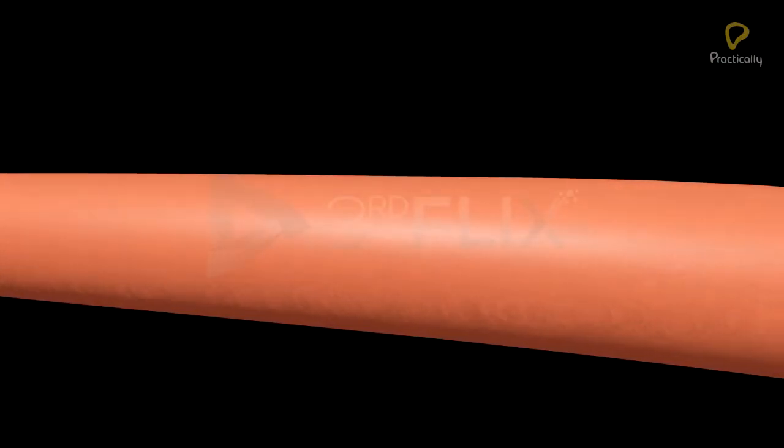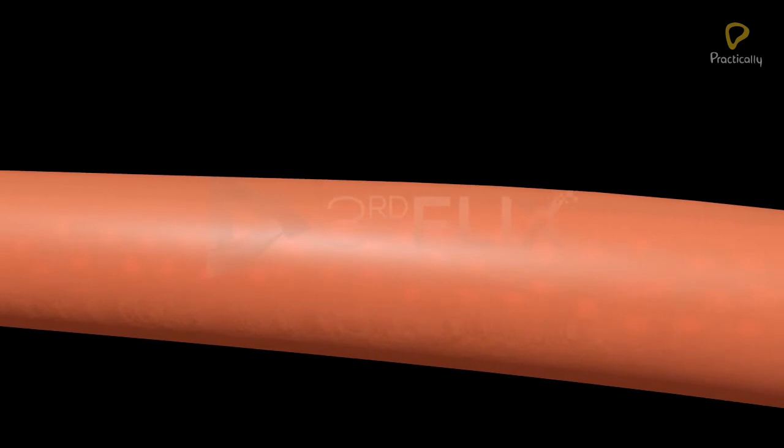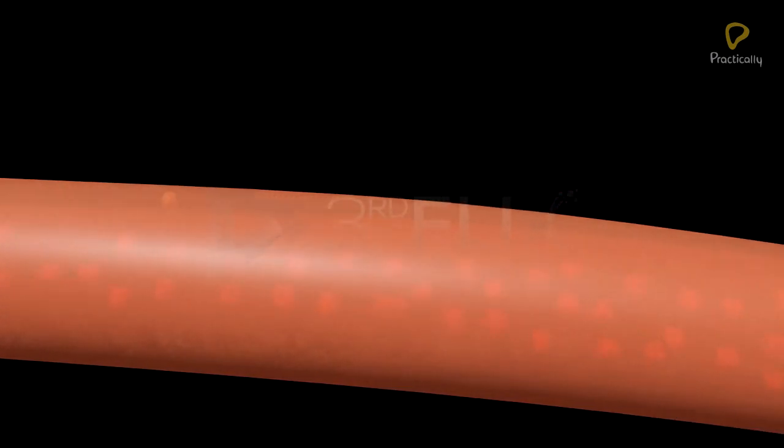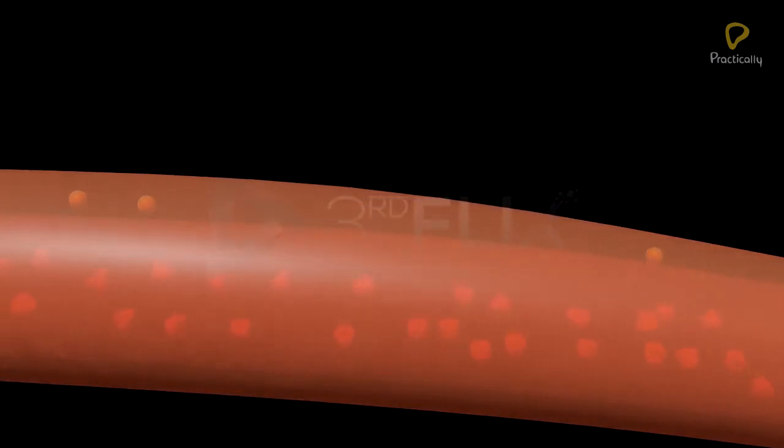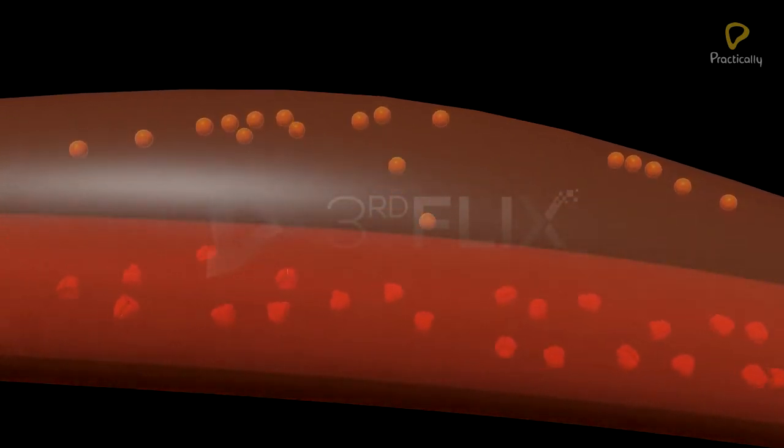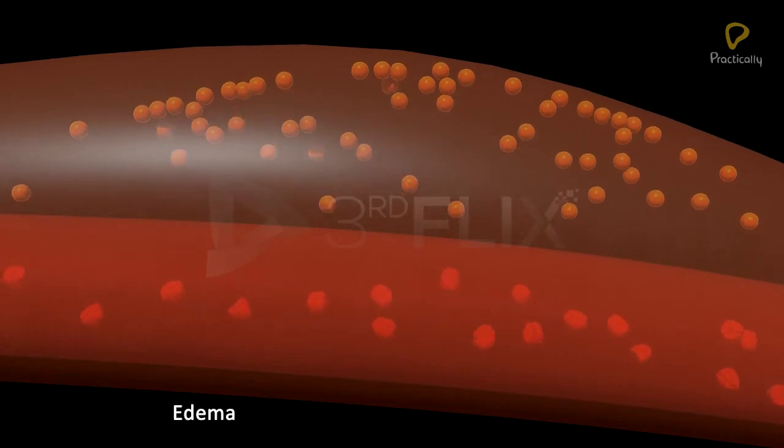Albumin is the smallest and most abundant plasma protein. It maintains the blood colloidal osmotic pressure. Its deficiency leads to accumulation of fluids in the tissues, a condition known as edema.